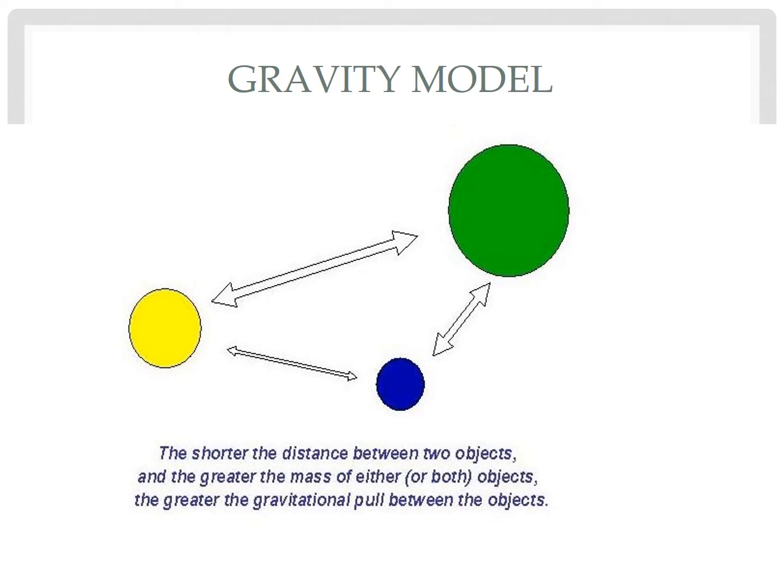When two places are close together, there should be greater interaction. But as distance increases, interaction will decline, which is the concept of distance decay. However, if two places have large populations, there should be a lot of interaction as well, even if there's a large distance between them.